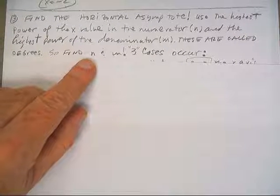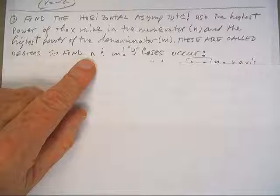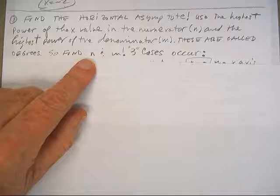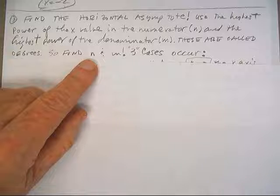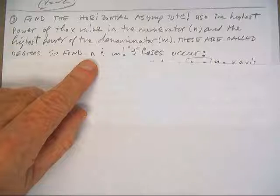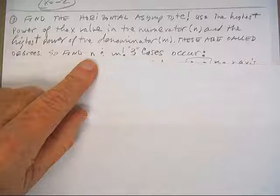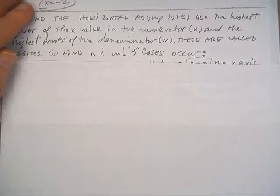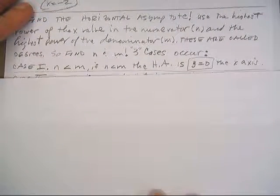Now the problem we're working on, the numerator is negative four, so there was no x up there, so n was zero. And m is the power of x, so that's one. Okay, three things can happen. So here's the three things that can happen.